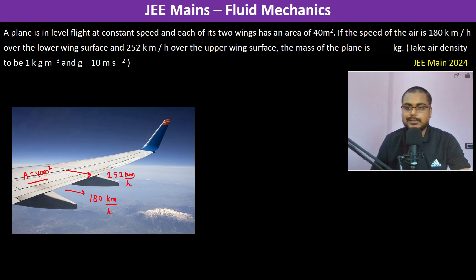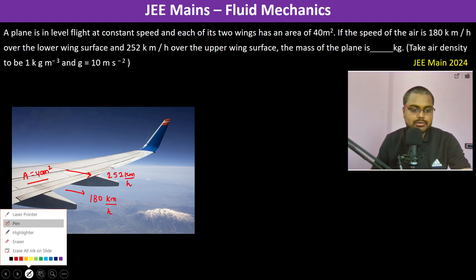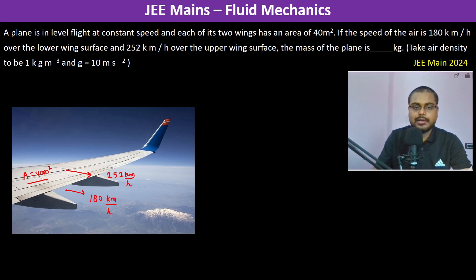The mass of the plane is what we need to find. So here we will be applying Bernoulli's equation. Bernoulli's equation tells us that P plus rho GH plus half rho V square is equal to constant.